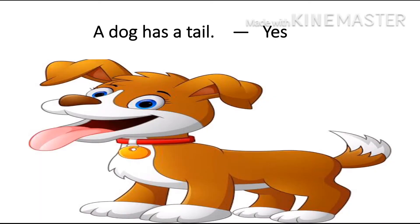Read along with me. A dog has a tail. Can you see in the picture? The dog has a tail. So what will we write? We will write Y-E-S, Yes. Remember that Yes has to be written starting with a capital Y.